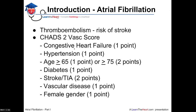The C stands for congestive heart failure — one point if present. H is hypertension — one point if present. A is age: greater than or equal to 65 gets one point, or greater than or equal to 75 gets two points. D is diabetes — one point. S is previous stroke or TIA — two points. V is vascular disease — one point, specifically an old myocardial infarction, peripheral arterial disease, or aortic atheroma. A is age again, and S is female sex — one point. The key distinguishing factors of CHADS2-VASc from the CHADS2 score are the inclusion of vascular disease, female gender, and age greater than or equal to 75 receiving two points.